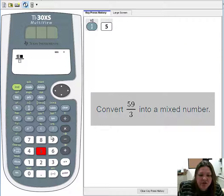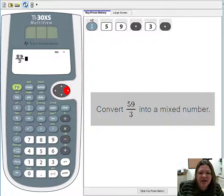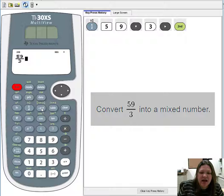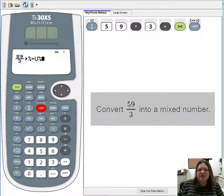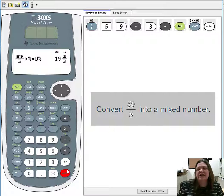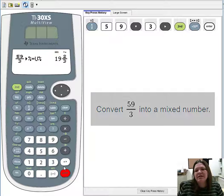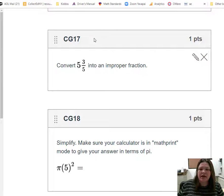I'm going to type 59/3, but this time I'm going to be smart and arrow out of the fraction before telling it to convert. Now I'll press second and then the convert to a mixed number button. And I see that is the same as 19 and 2/3.